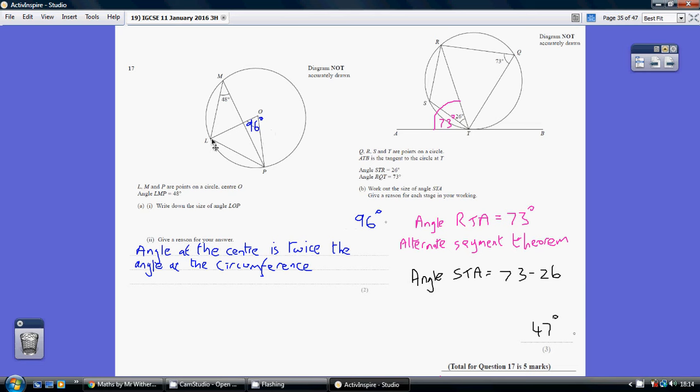Well, we can see if we look at the points LP, this is a point on the circumference between going from L to the point in the circumference to P. This is a point in the center. And one of the circle theories tells us that the angle at the center is twice the angle at the circumference.